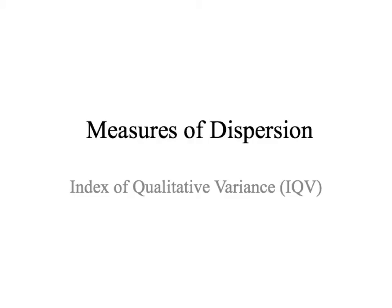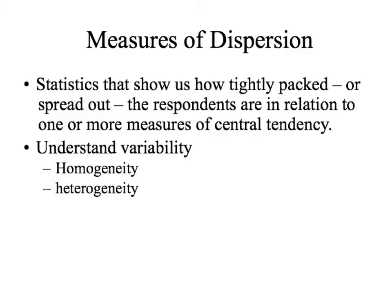In this video, we are going to be talking about the first measure of dispersion: the index of qualitative variance. Measures of dispersion overall are a type of statistic that shows us how tightly packed, or how spread out the respondents are in relation to one or more measures of central tendency. It allows us to understand the variability in the distribution — how homogeneous or heterogeneous our distribution is.